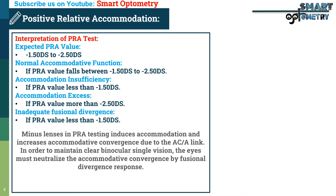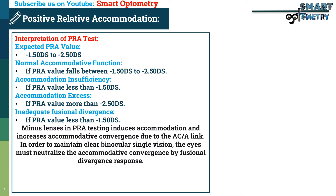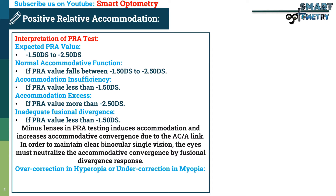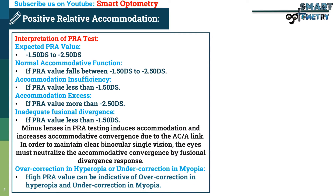Minus lenses in positive relative accommodation testing induce accommodation and increase accommodative convergence due to the AC/A link. In order to maintain clear binocular single vision, the eyes must neutralize the accommodative convergence by fusional divergence response. Inadequate fusional divergence can therefore limit the endpoint of positive relative accommodation measurement. PRA can also identify over-correction in hyperopia and under-correction in myopia.